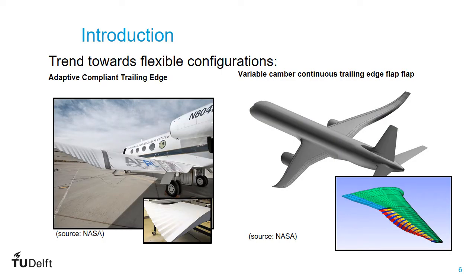There is already a trend towards more flexible configurations. On the left, we see an example from NASA and Flexis that developed this morphing wingtip device. On the right, we see an example from NASA Ames, which developed the VCTF concept with flexible continuous camber morphing.